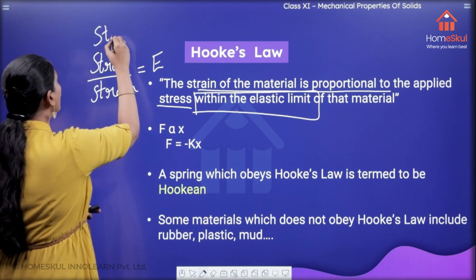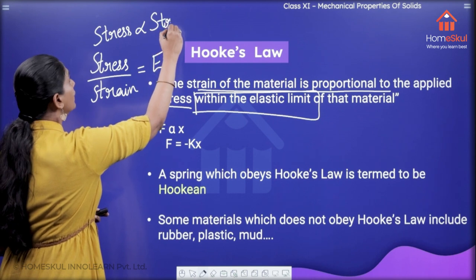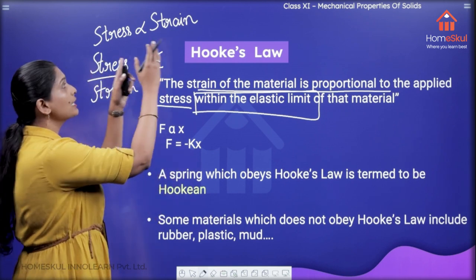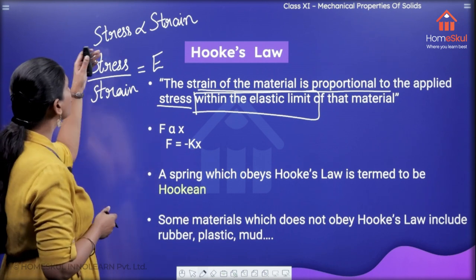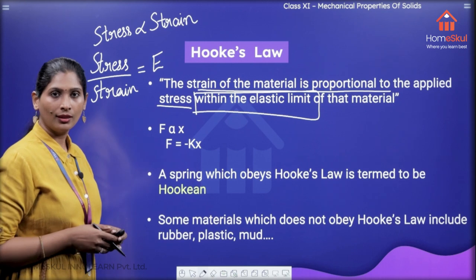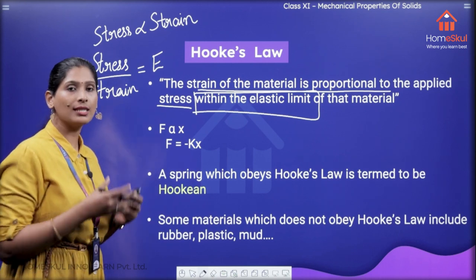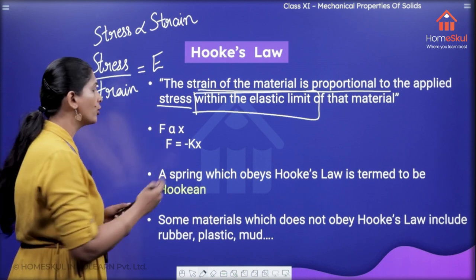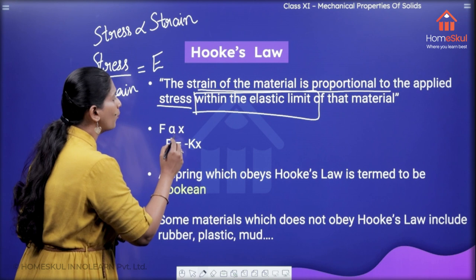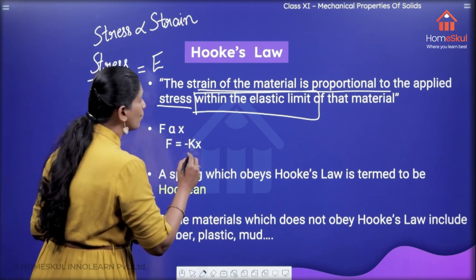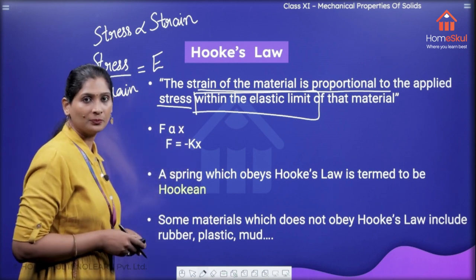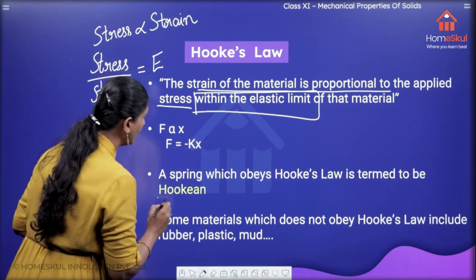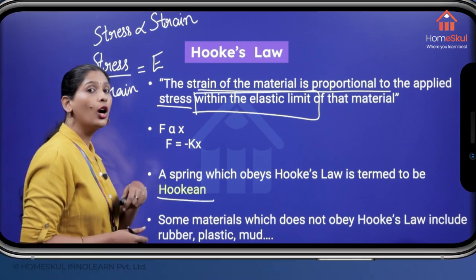So we say from Hooke's Law: stress is proportional to strain within the elastic limit. Only if it is within the elastic limit is the stress proportional to strain. From that, we can say that stress by strain — that ratio — is a constant. So if I am considering a spring which is obeying Hooke's Law, then if a force F is applied onto the spring and the corresponding extension produced is X, I can say that F is proportional to X, or rather F is equal to minus KX, where K is a constant. A spring that obeys Hooke's Law is termed a Hookean spring.